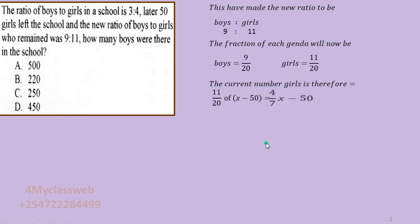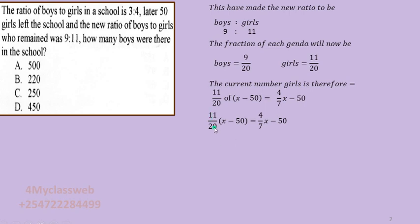This expression for the current number of girls — 11/20 × (x − 50) — must equal what we had previously: 4x/7 minus 50. This is because both expressions represent the number of girls after 50 of them left. So our equation is: 11/20 × (x − 50) = 4x/7 − 50. This equation will help us find the value of x.